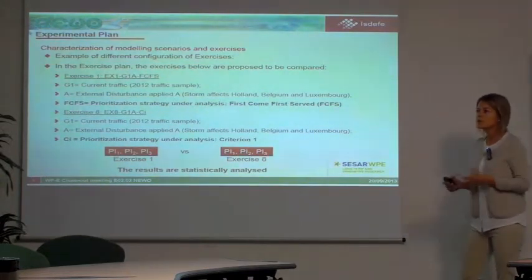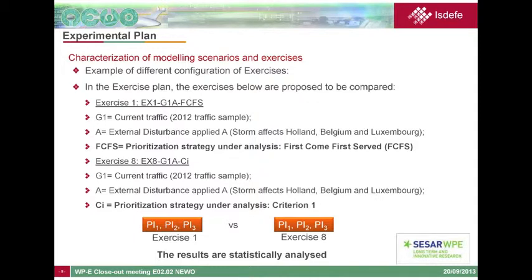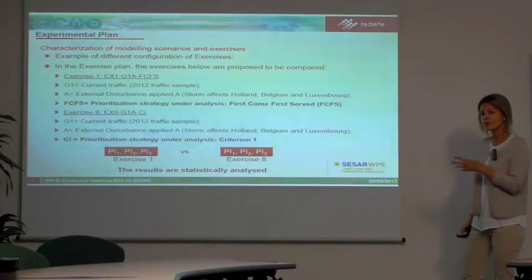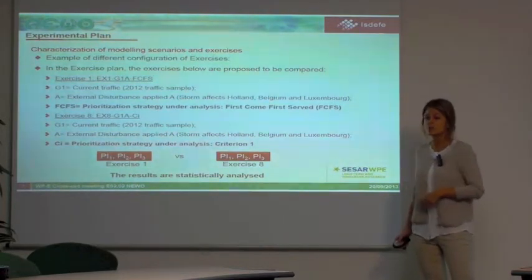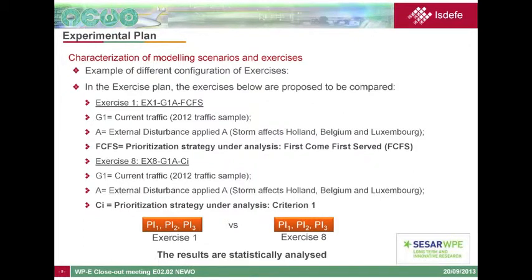Here is an example of two exercises from the experimental plan. Both use current traffic — a sample from one day in April 2012 — and external disturbance A. Exercise 1 uses first-come, first-served as the prioritization strategy, while exercise 8 uses criterion 1. We then compared performance indicator values obtained from running both exercises through histograms and statistical analysis.